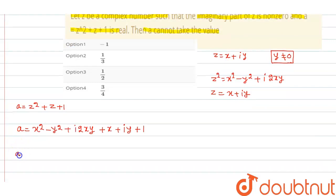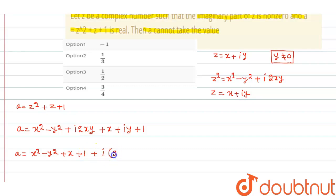So a is equal to x squared minus y squared plus x plus 1, from the real parts. The imaginary part is iota times 2xy plus y. Since it is given that the whole thing is a real number, the imaginary part should be zero.